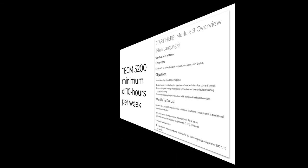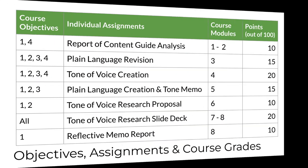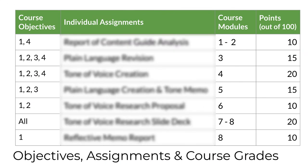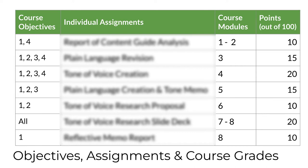Now let's talk about the actual assignments for which you earn grades. This table summarizes it — you'll see this also on Canvas. It includes assignments along with the learning objectives they support and the way in which each of them contributes toward the total of 100 points that determine your course grade. They're listed in the order in which you complete them in the course. These are all individual assignments. Although there are no team projects in this particular TECM course, you will regularly analyze or review the work of other students in order to develop effective feedback skills.